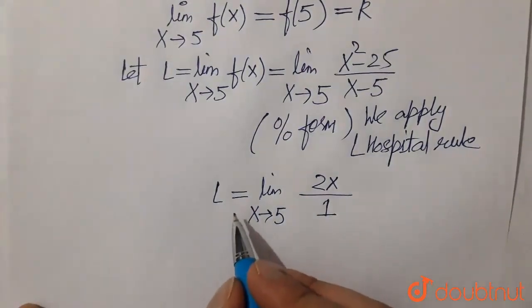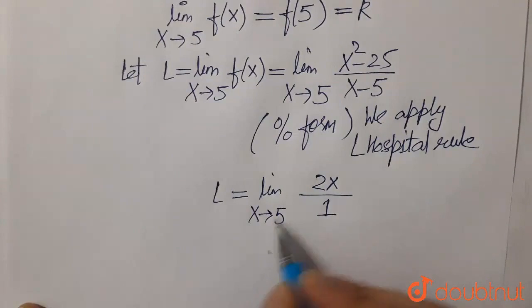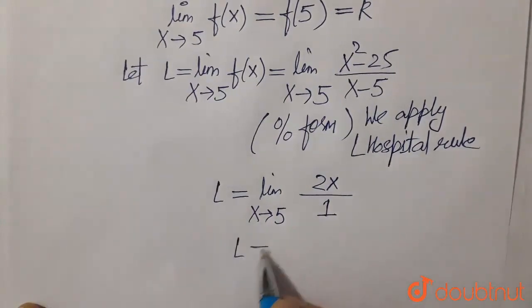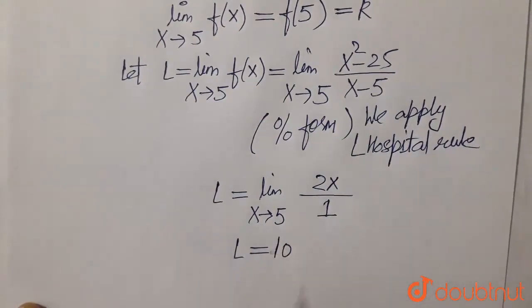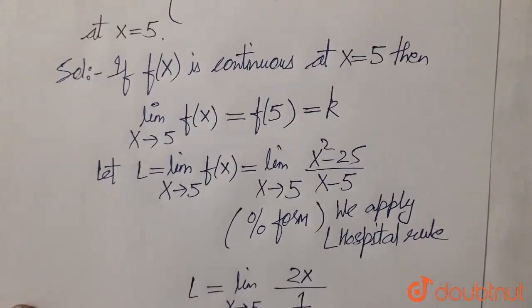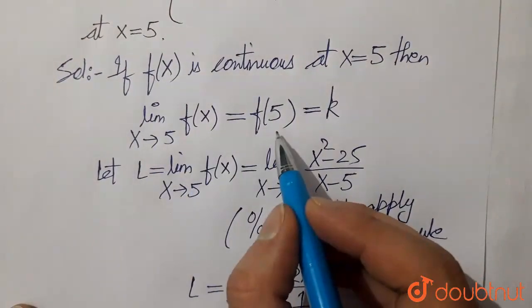So the limit value is coming out. We put x equals 5 here, and the limit value is 10. So 10 equals the limit value, which equals f(5).